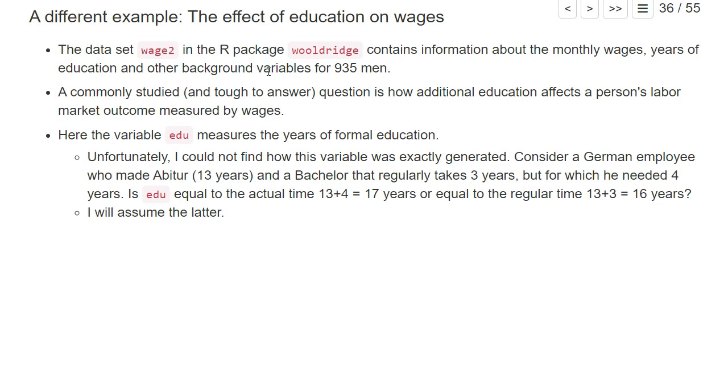Let us look at another example. The dataset Wage2 in the R package Wooldridge contains information about monthly wages, the number of years of education, and other background variables for 935 men.